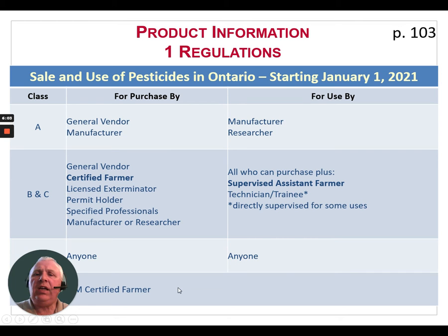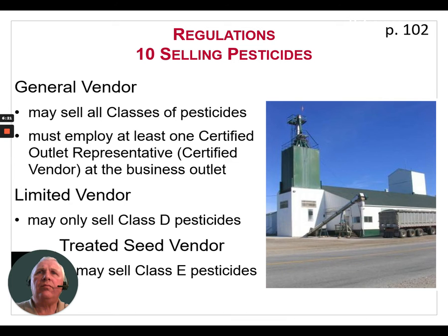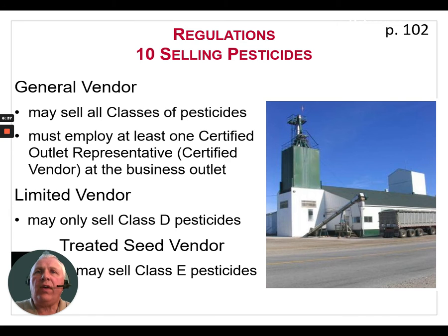Also listed is Class E, which is for IPM-certified farmers — that's for treated seed that has been treated with neonics; very little of that is used in Ontario today. When it comes to selling pesticides: a general vendor may sell any class of pesticide at their retail location but must employ at least one certified outlet representative. A limited vendor may only sell Class D pesticides, and a treated seed vendor may only sell Class E pesticides.